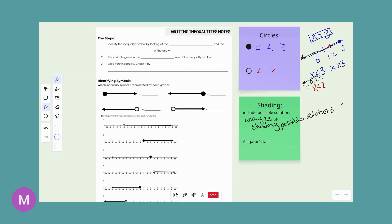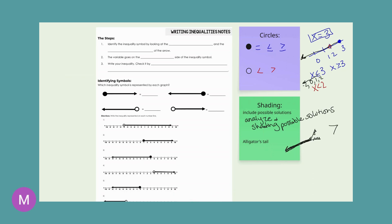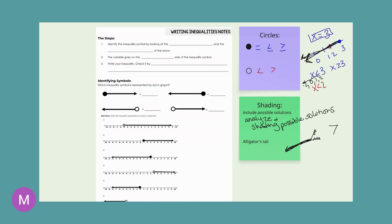Now, when I talk about the alligator tail: when we learned in elementary school that the alligator wants to eat the bigger number, we didn't talk about inequalities as solution sets. With the alligator's tail, if you look at the mouth with the teeth, the tail would be going the opposite direction of the mouth — so you shade in the direction of the tail. The other thing you can see: when you shade x is less than or equal to 3 and include the arrow, look at how it forms the same symbol as the inequality symbol — it's going the same direction. It looks just like the less than symbol.